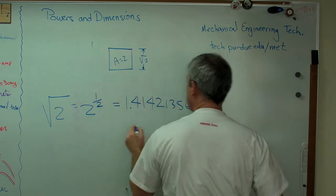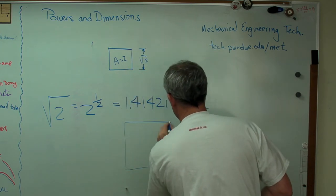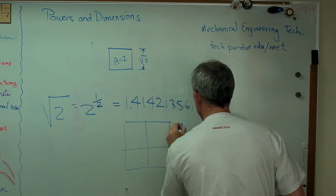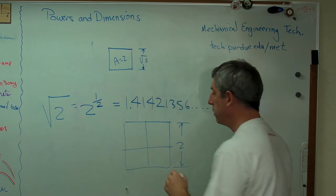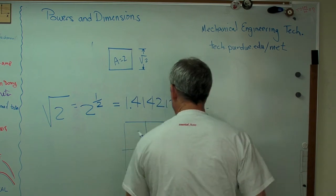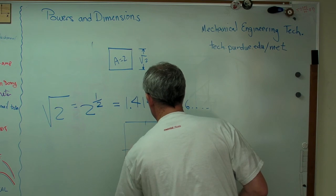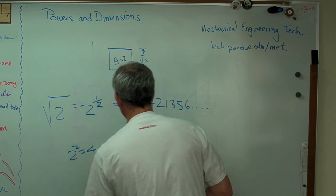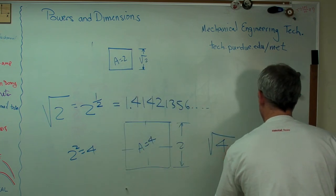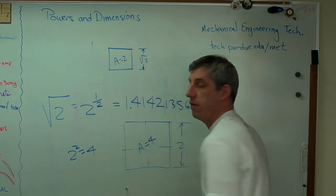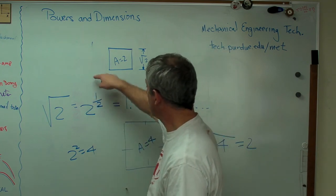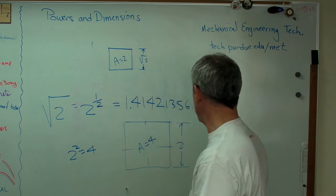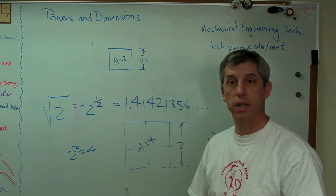So if I had a box that was 2 on a side, 2 inches or 2 meters or 2 somethings on a side, guess what? The area is 4, so 2 squared equals 4, and square root of 4 equals 2. Those are opposites of each other. If you take 2 to the second power, you get 4. If you take 4 to the 1 over 2 power, you get 2.